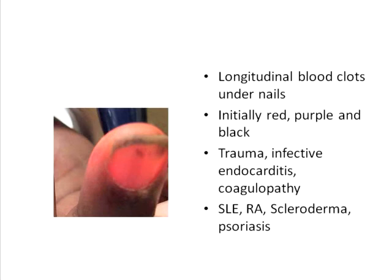Coagulopathy is an important reason for splinter hemorrhage. As with Roth spots, splinter hemorrhages can also be seen in SLE, rheumatoid arthritis, and psoriasis with nail involvement.